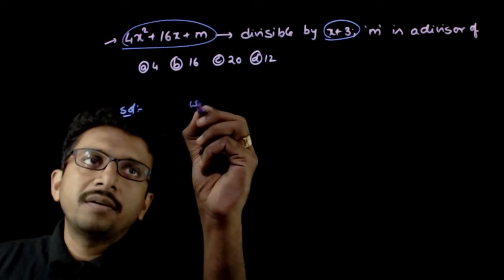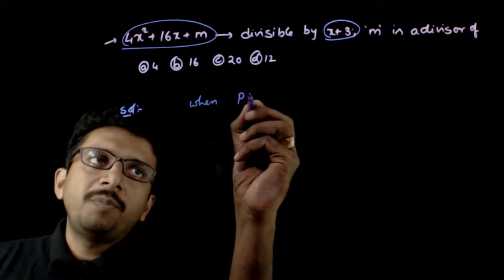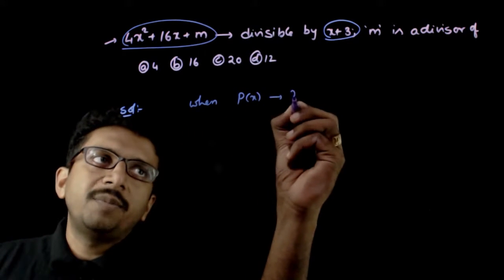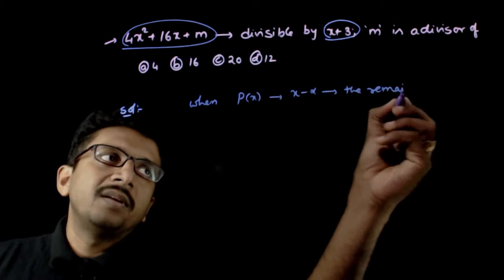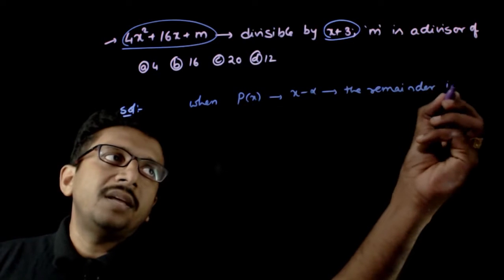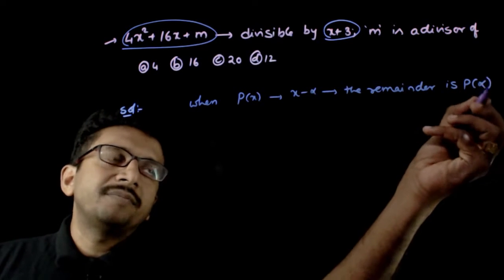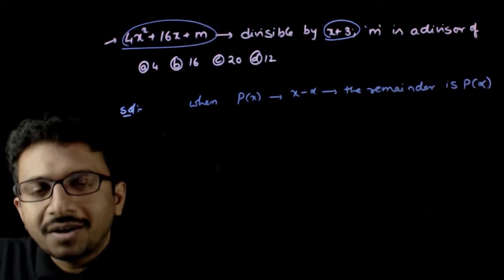When a polynomial P of x is divided by x minus alpha, the remainder is P of alpha. So it is called remainder theorem.